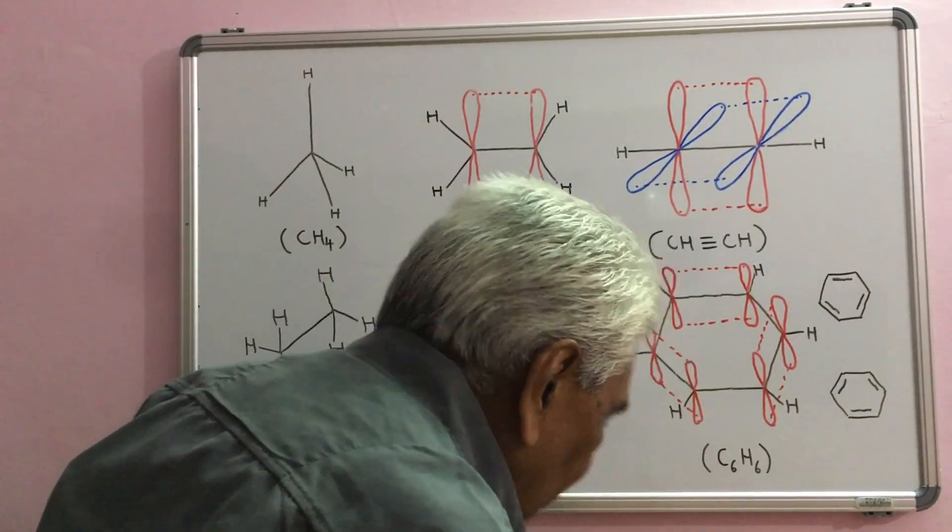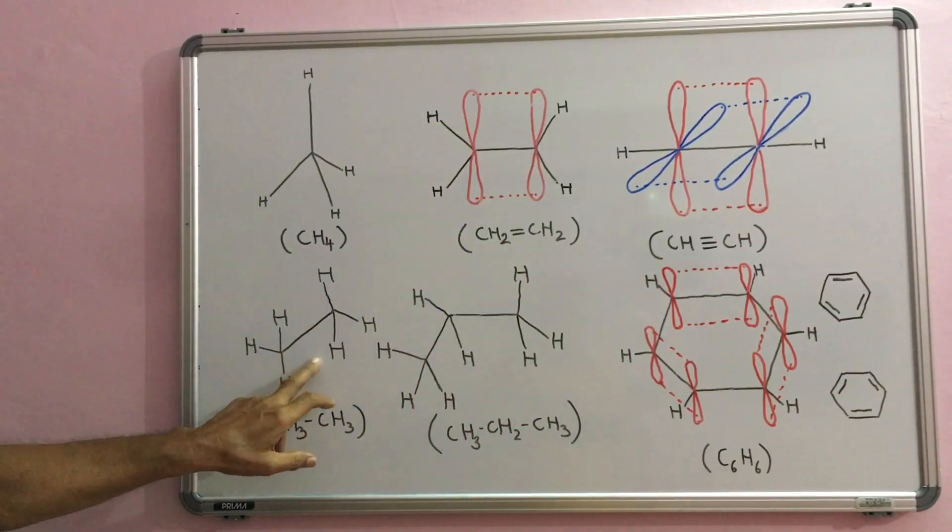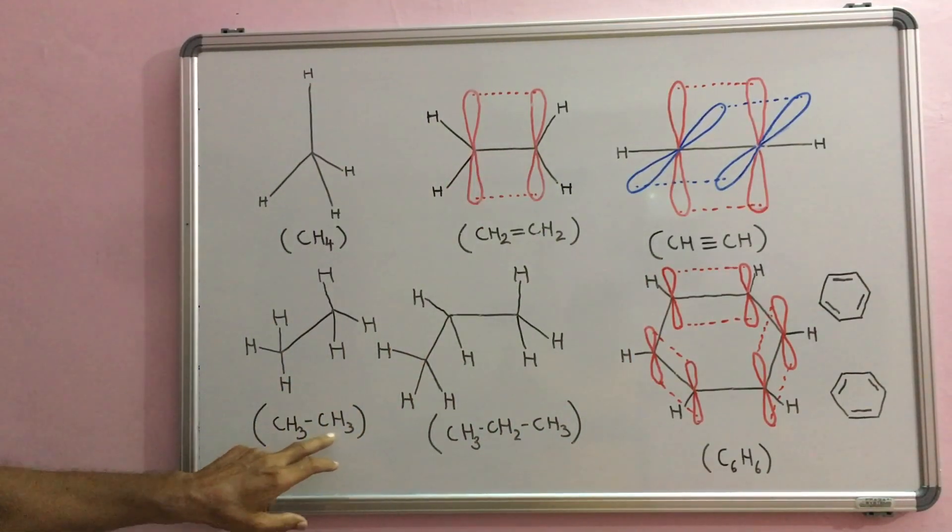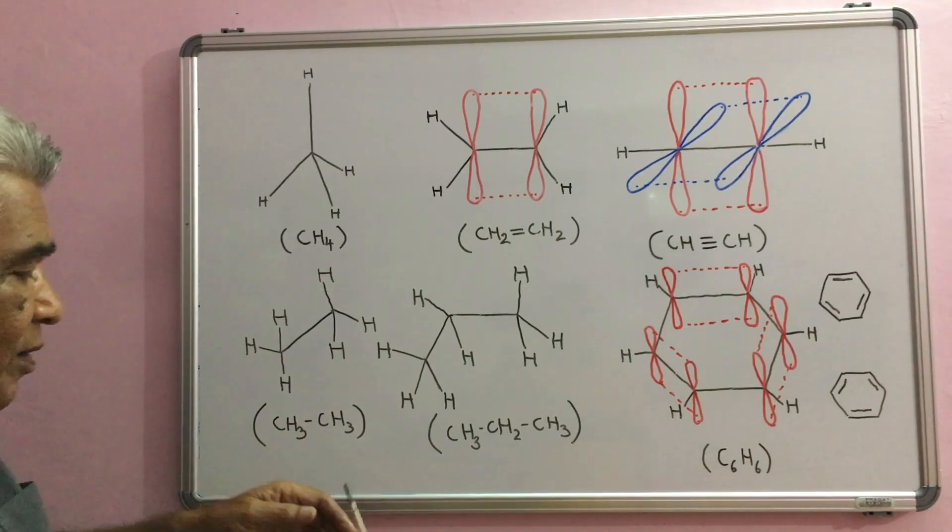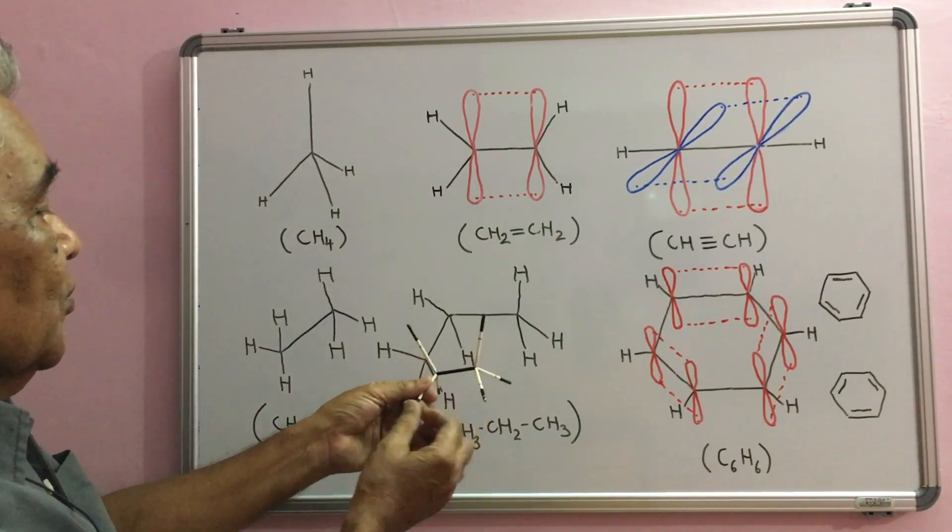Now, if you want to form ethane molecule - for example, these two molecules, this is C and one C. This C with these three H and one C - both are sp3 hybridized. They form this type of molecule.